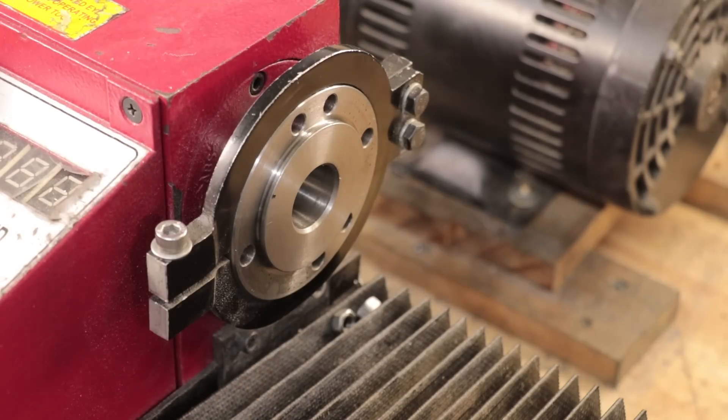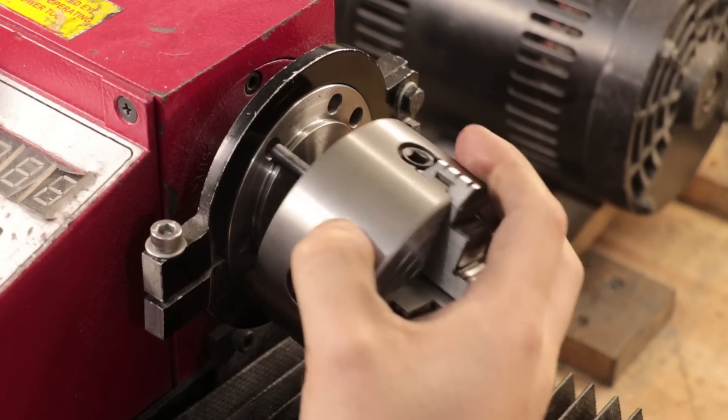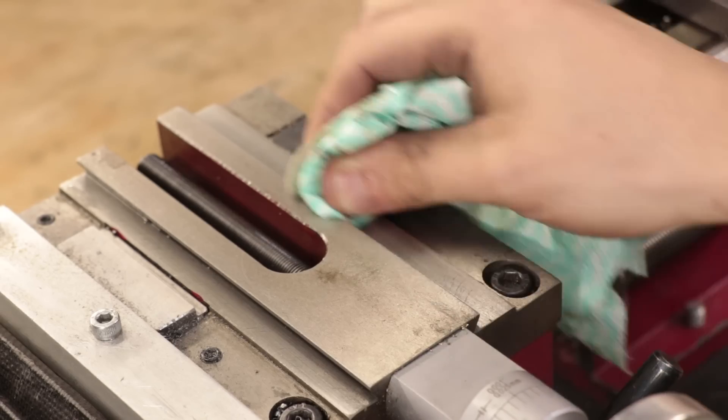With the shaft done, I'll swap in the independent 4-jaw chuck and set up the lathe to cut a Morse 2 taper.